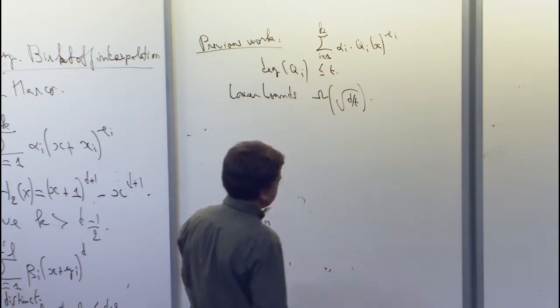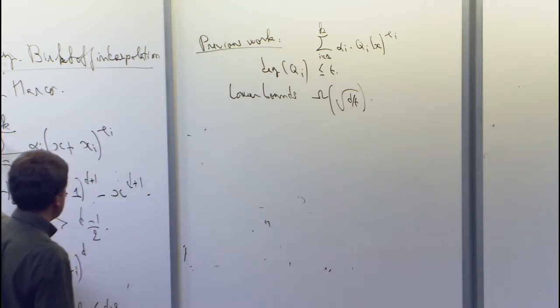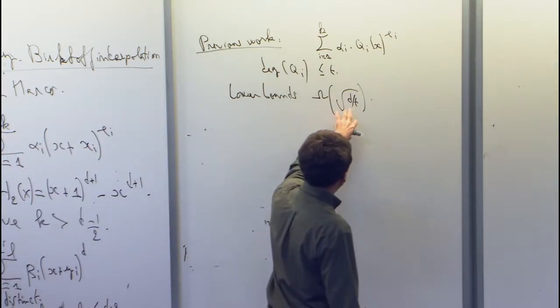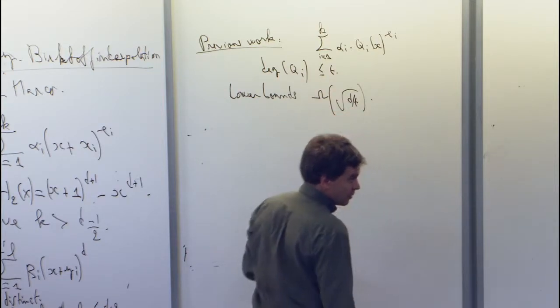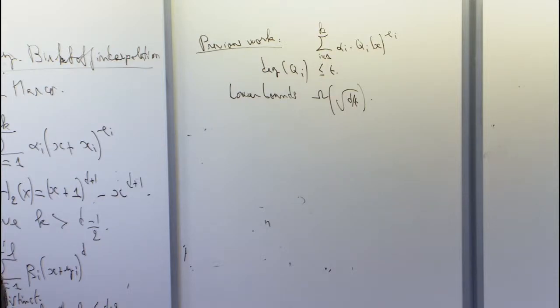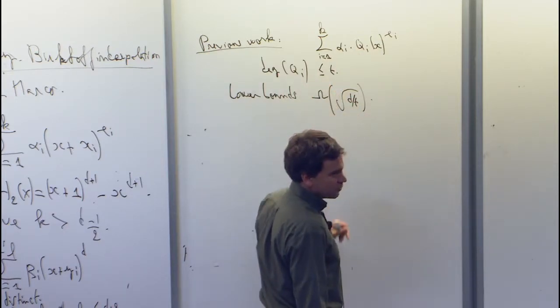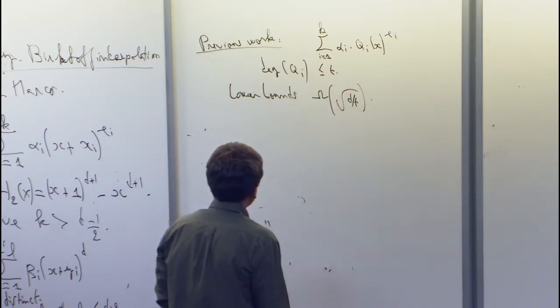So you see that for t equals 1, of course you're back to this model here, and the order is square root d. So of course, this new result is a significant improvement over this, only for t equals 1 for now.